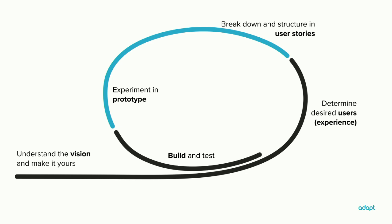The reason I've highlighted a particular part of this circle is because from my point of view, this is where a lot of knowledge gets lost and a lot of misunderstandings happen — it's one of the weak spots in the loop. That's what I'm going to talk about. Then Maz will elaborate further on how you structure your prototype to take it into the development and test phase.